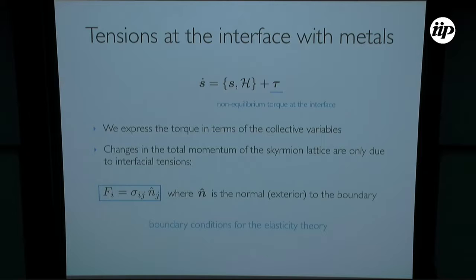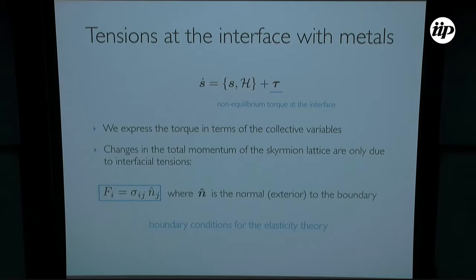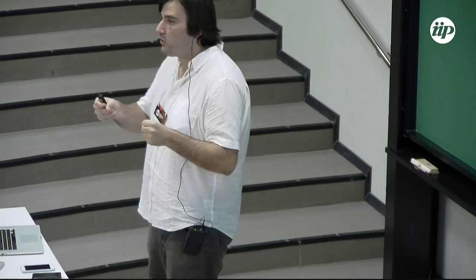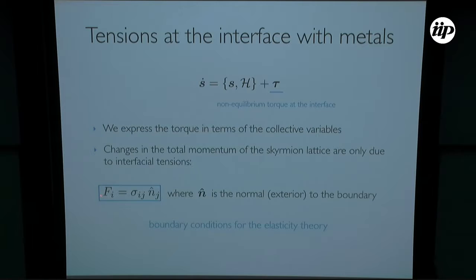I now supplement the Landau-Lifshitz dynamics at the boundaries with metals with the non-equilibrium torques generated by the electrical currents, assumed via interfacial exchange interaction. The goal is to express these torques in terms of the collective variables, which I can do by energy considerations following the same arguments used for the bulk dynamics. The boundary conditions are constructed by observing that the total change of linear momentum of the crystal is only due to forces applied through the boundaries, relating the components of the torque force in these collective variables to the components of the strain tensor evaluated at the boundaries.